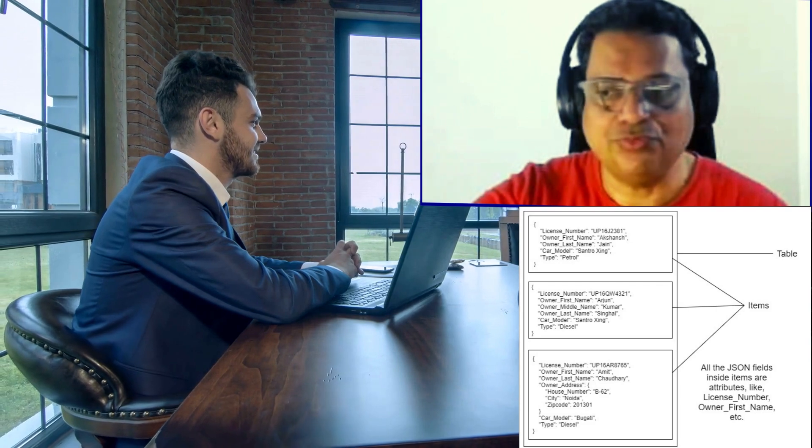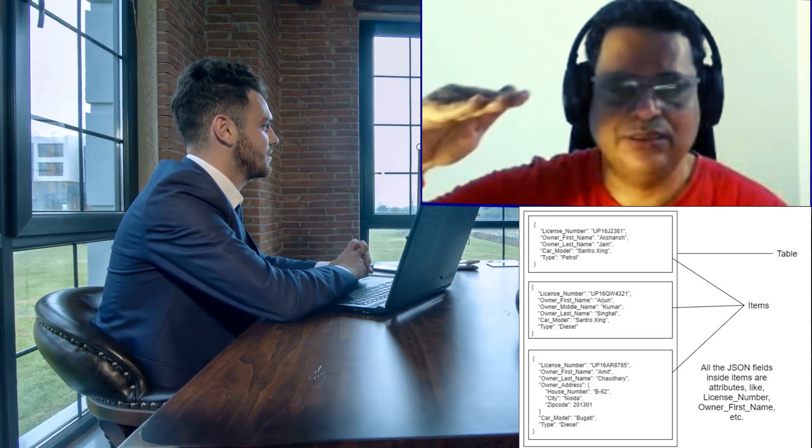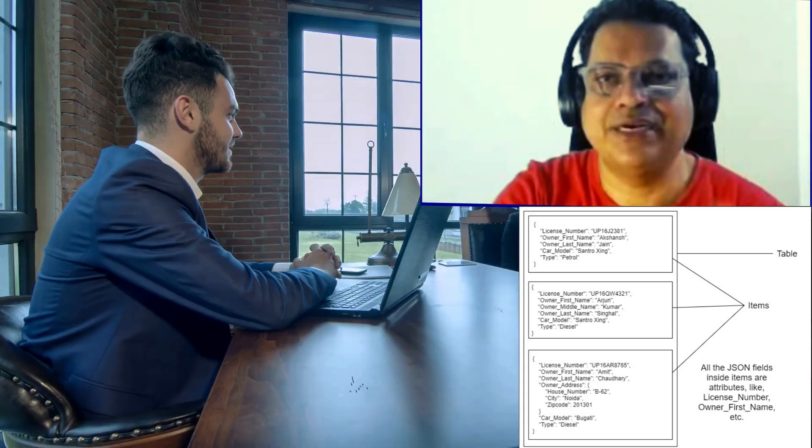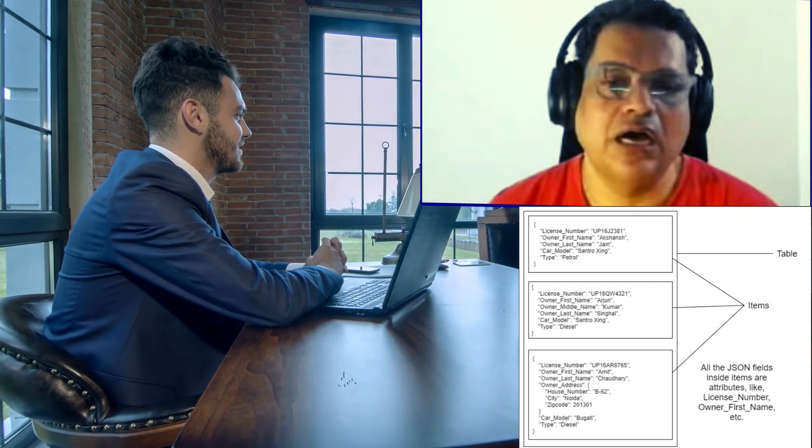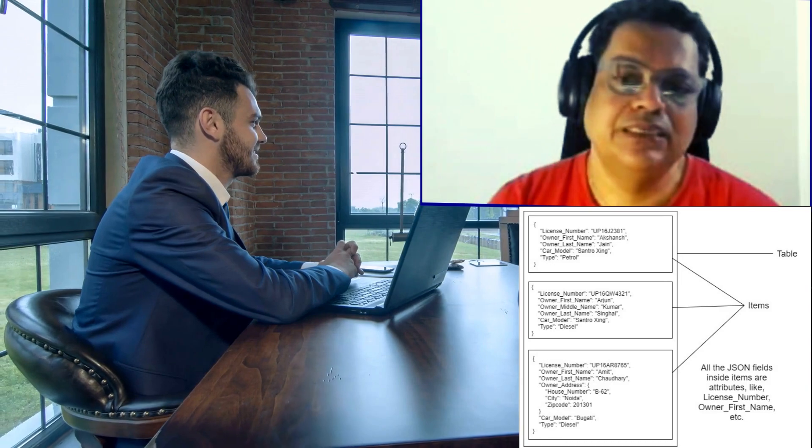Just like in SQL, we have a row and inside the row we have multiple columns. In the same way, we have a table. Inside table we have multiple items, and each item has one or more attributes. I hope until now you are clear how tables, items, and attributes are understood inside DynamoDB. Let's move on.